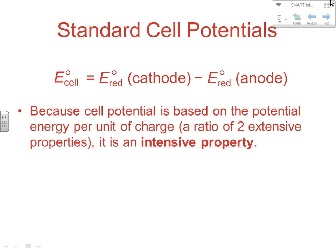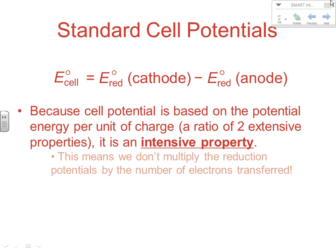This is our base equation for calculating cell potentials. Because cell potential is based on potential energy per unit of charge, it's a ratio of two extensive properties — just like mass and volume are extensive properties but their ratio, density, is intensive. Cell potential is an intensive property, which means we don't multiply the reduction potentials by the number of electrons transferred. It doesn't matter on amount; it's not extensive.